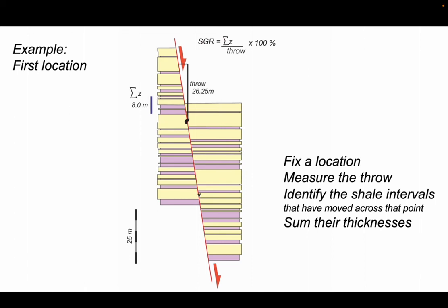Here they are and these are their individual thicknesses. Let's add them together. That's the sum of the shale thicknesses, sigma z, and as we can see that equates to a thickness of 8.0 meters.